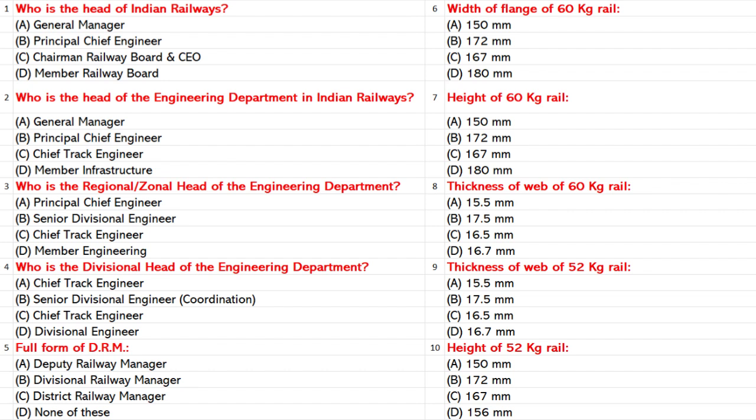Width of Flange of 60 kg rail: A. 150 mm. B. 172 mm. C. 167 mm. D. 180 mm. Answer: A. 150 mm.